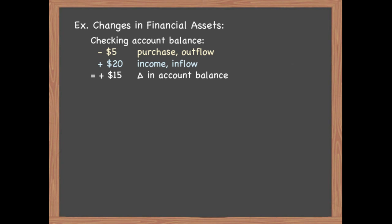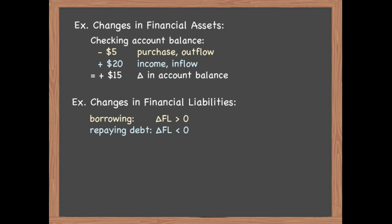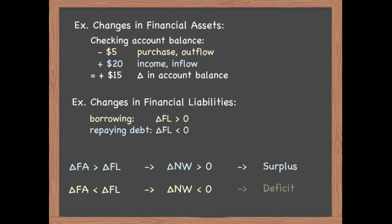To consider what it means to run a deficit or to save, we need to look at how accumulated amounts change over time. For example, if you spend $5, the amount of dollars in your checking account goes down — there is an outflow of funds. If you earn a salary of $20, there is an inflow of funds. The net change in your financial assets would be an increase of $15. Similarly, if you borrow funds, the outstanding amount of financial liabilities goes up, and if you repay your debts the outstanding amount of liability declines. If financial assets increase by more than financial liabilities, you have accumulated more IOUs on others than others have accumulated on you — you are running a surplus. Running a surplus means the change in net worth is greater than zero; running a deficit is the reverse.